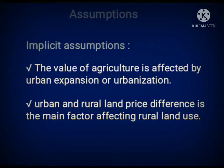The first implicit assumption is that the value of agriculture is affected by urban expansion or urbanization — agricultural value increases because of urban expansion. The second implicit assumption is that the urban and rural land price difference is the main factor affecting rural land use.